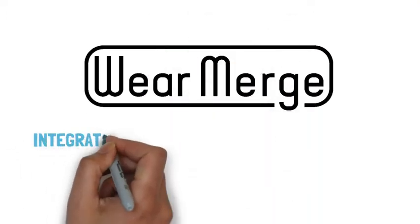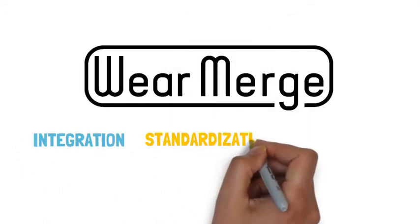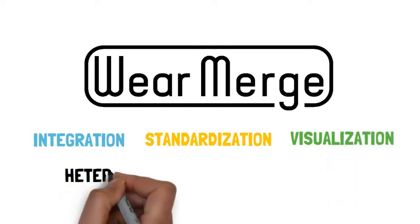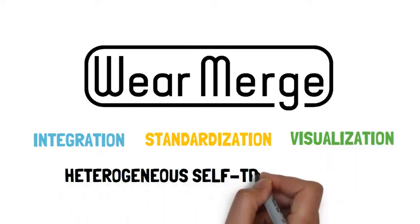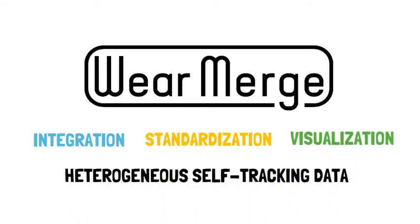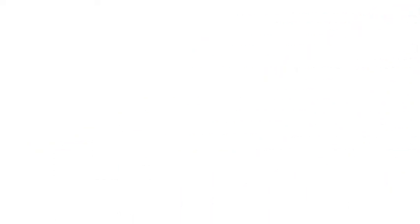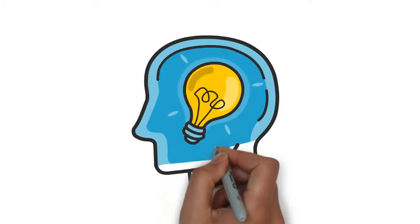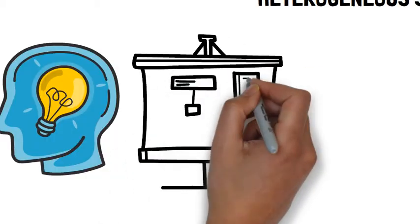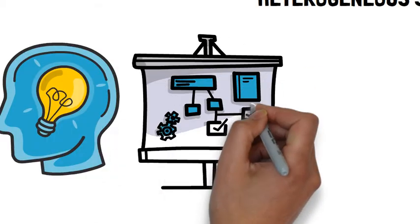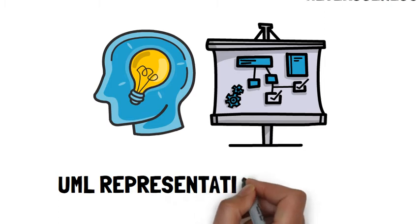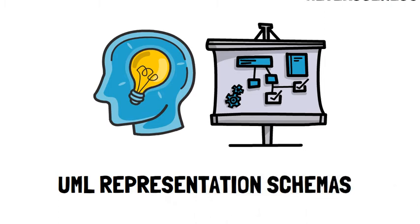WearMerge is an online platform for the integration, standardization, and visualization of heterogeneous self-tracking data — and it doesn't stop there. To help you understand your data, we provide open-source UML diagrams depicting the representation schemas of all major wearable manufacturers.